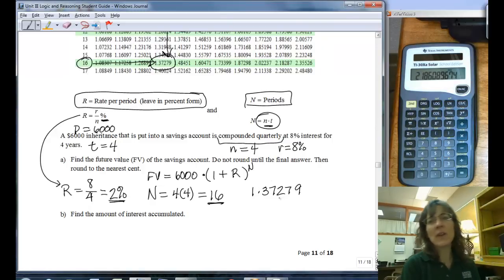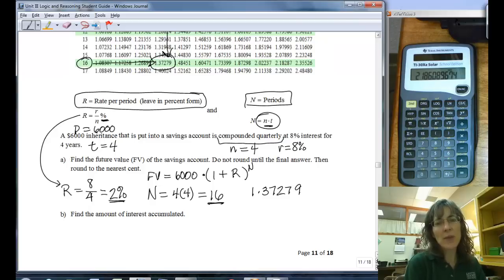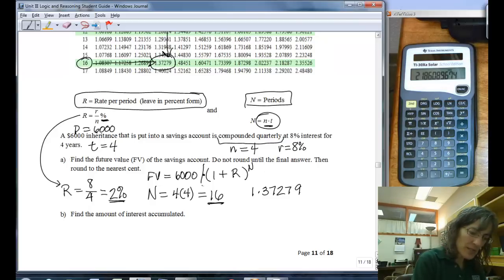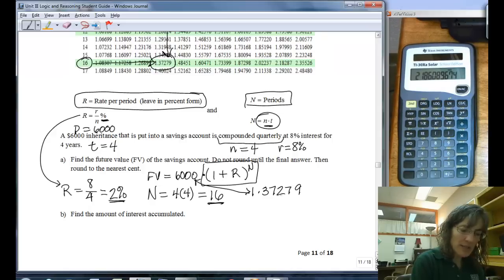So that is the value that I would have gotten, or very close to it, if I would have plugged in the r over the n and raised it to the nt, the calculations that we were just doing. Now there's a table that I can look up that piece of it, and all I have left to do is multiply by 6,000.